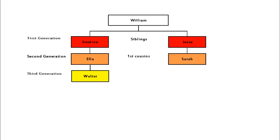Sometimes people will call Walter and Sarah second cousins, but they actually are first cousins once removed. Walter is Ella's son—one generation distant or removed from that first cousin relationship. Let's look at an example that is a bit more complicated.